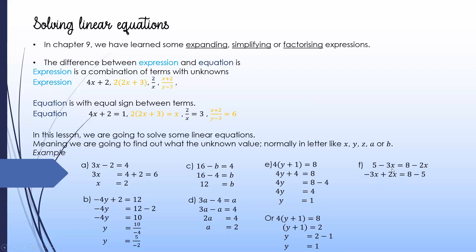For example f: if you have unknowns on both sides, collect them on one side and the numbers on the other. Bring negative 2x over as positive 2x, leaving 8 on the right. Bring positive 5 over as minus 5. You end up with negative x equals 3. Since we want positive x, multiply both sides by negative 1, so x equals negative 3.